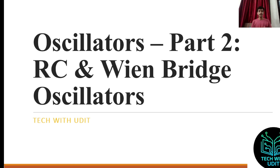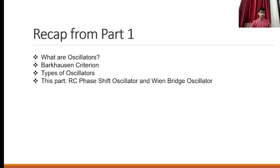In the previous lecture, I discussed about the oscillator — what is the oscillator and what is the criteria to determine whether it is an oscillator or not. We covered what are oscillators, Barkhausen criteria, and types of oscillators. I request that if you are watching this video, you must complete part one of this lecture first, which covers those topics.